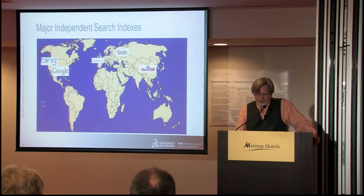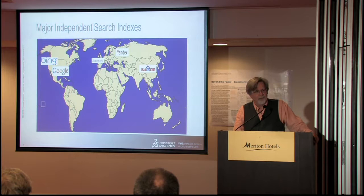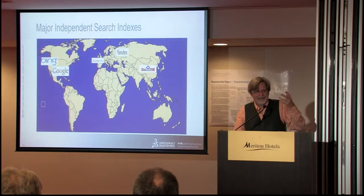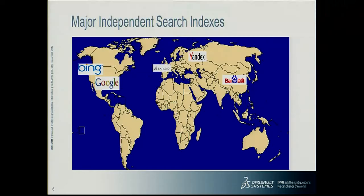If there are only a few indexes, there are only a few ways to get information, and that missing information is missing forever. The current situation is there are only five major independent indexes: Bing and Google, which have two independent crawls in North America; Baidu in China; Yandex in Russia; and Exalead, the last remaining European-type independent index. Our index is a bit smaller — about 16 billion pages — but it's at the same level as the others.